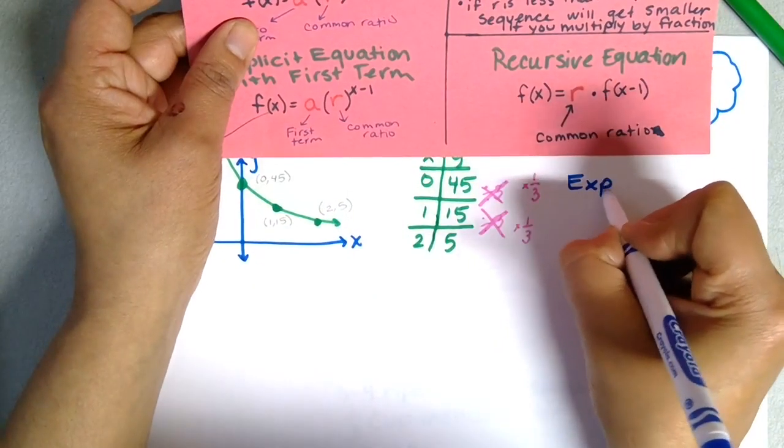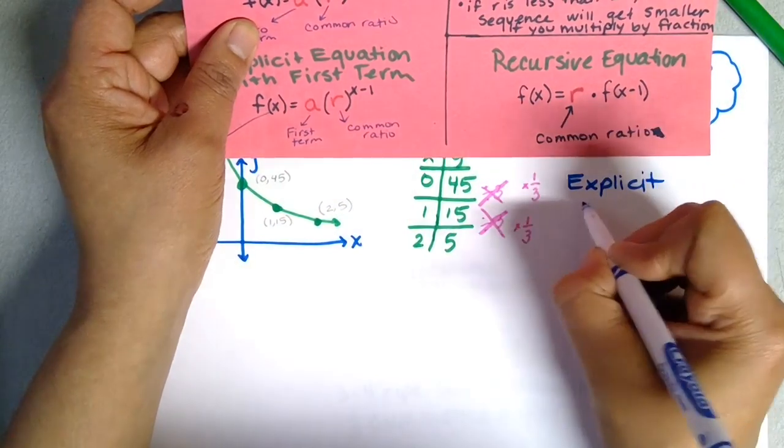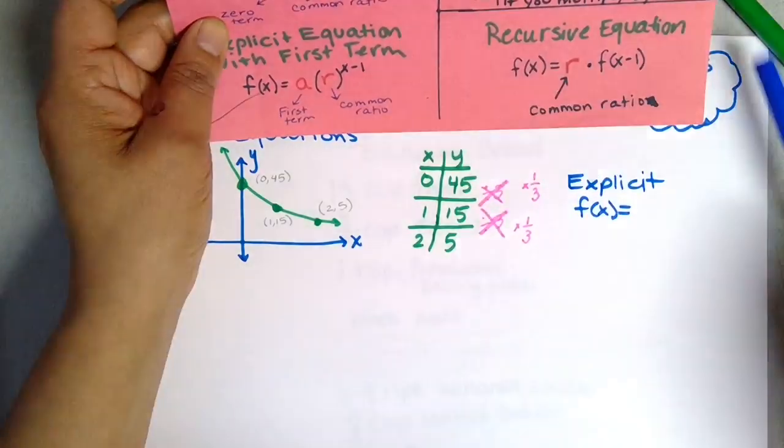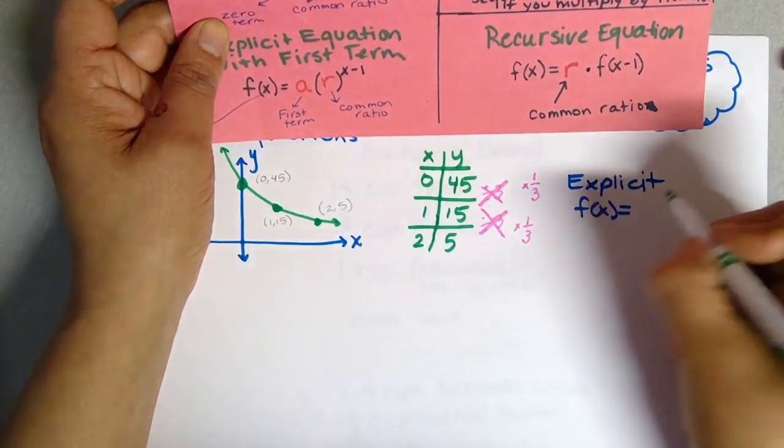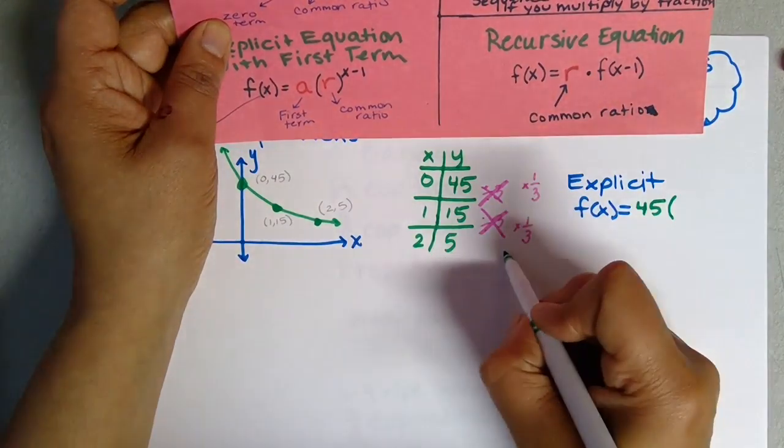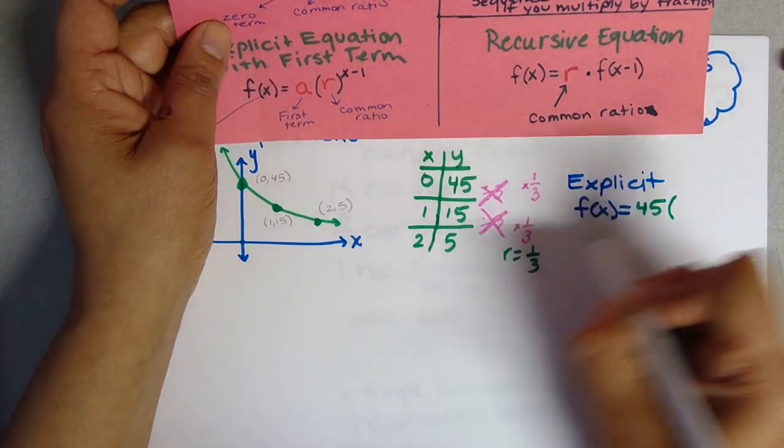For the explicit: f(x) equals my zero term—well, my zero term is 45—my common ratio, my common ratio is 1/3, and then it's to the x power. That's it for the explicit.